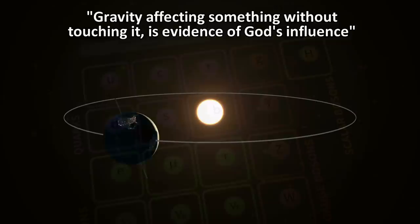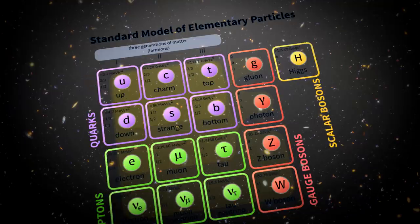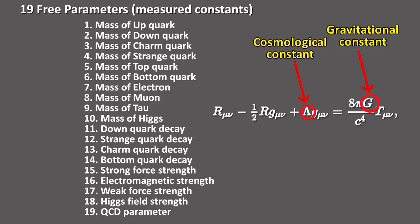But Newton wasn't aware of particle physics, quantum mechanics, and general relativity. These are the best theories we have today to explain the true workings of the universe. And these theories require at least 19 constants. And they have to be measured. So what accounts for these constants? There are currently no equations or theories from which these parameters arise.